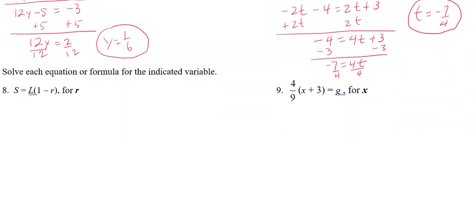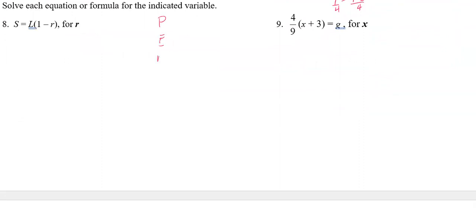For numbers eight and nine, it's helpful to use PEMDAS in reverse. I'm solving for R, so I'm focused on the right side of the equation, identifying what parts of PEMDAS exist there. I'm multiplying by L, so check off multiplication. There are also parentheses involved — mark those and save what's inside for last. In reverse order, I undo multiplication first, then deal with what's inside the parentheses second.